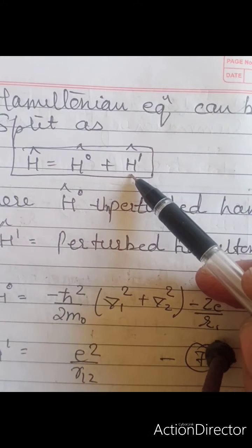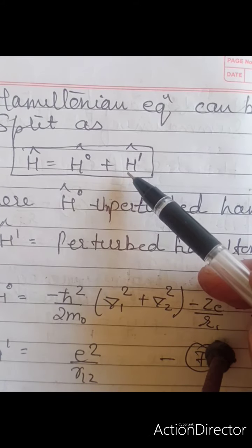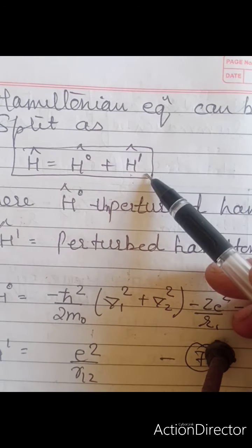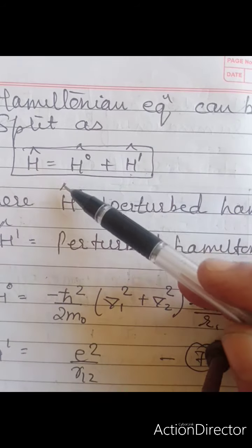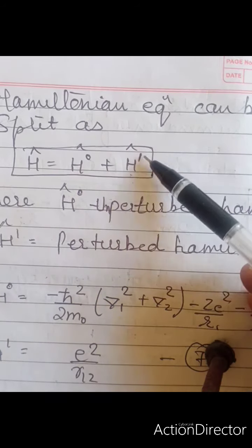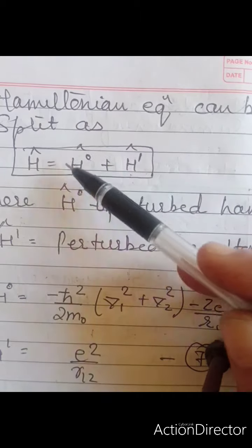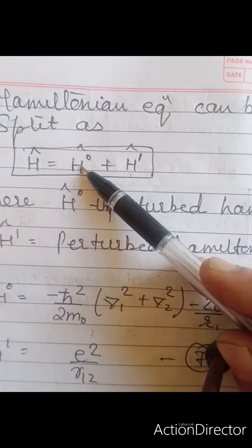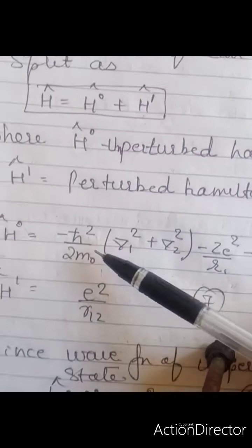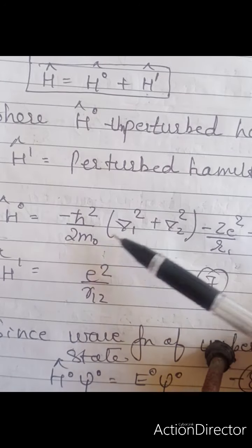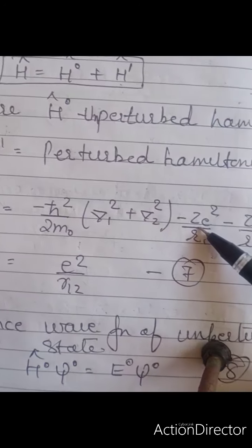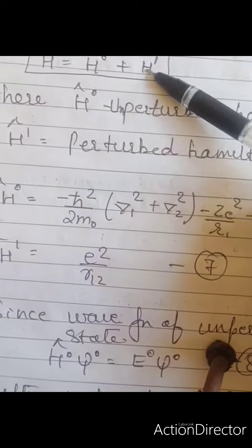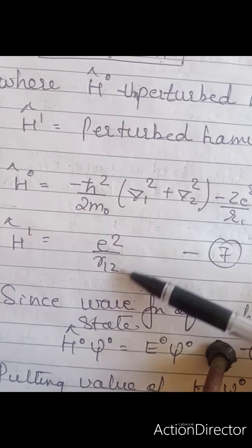In perturbation theory we split the Hamiltonian into perturbed and unperturbed parts: H = H⁰ + H¹. Here H⁰ is the unperturbed part with value: minus ℏ²/2m·(∇₁² + ∇₂²) minus ZE²/R1 minus ZE²/R2. The perturbed part H¹ is the electron–electron repulsion term.